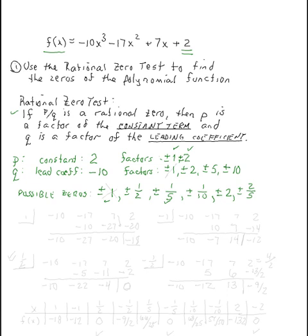What we've built is a set of 12 possible zeros total when we include the positive and negative values. Now we want to find which ones actually give a value of zero. We could use a table function on a calculator to get these quickly, but we're going to use synthetic division, starting with the first factor at a time.